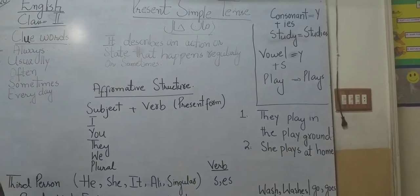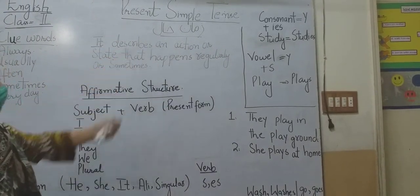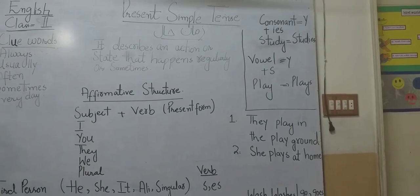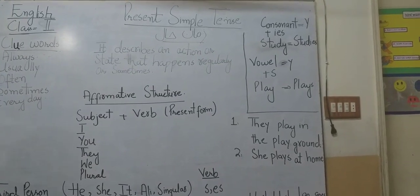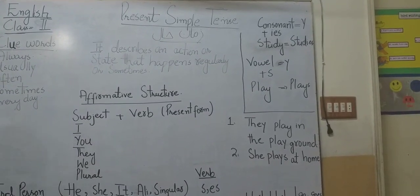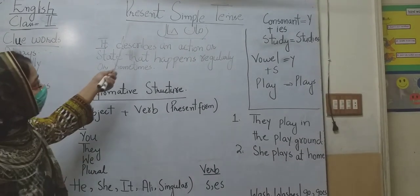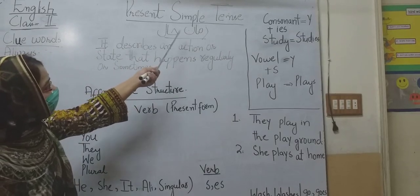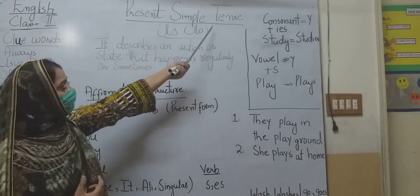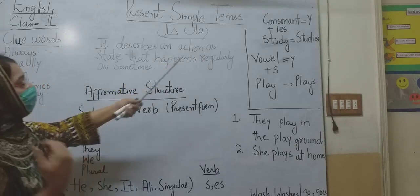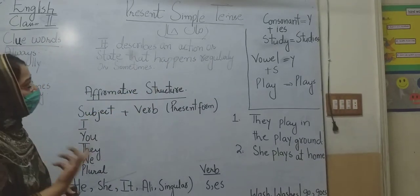First of all, I am going to talk about present simple tense. Present means 'mojuda' — right now. In Sindhi and in Urdu, the meaning of this tense is 'zamaneha.' Tense means time. It actually shows time — which time is going on?